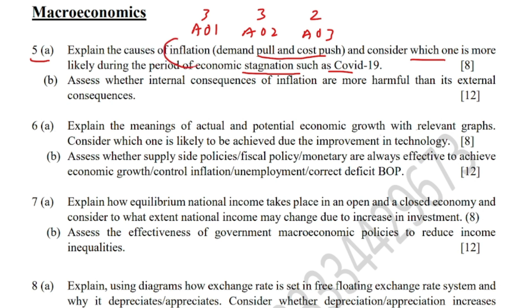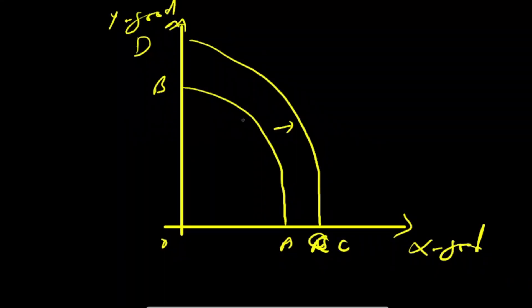For Assessment Objective 1, you first define what inflation is, what demand-pull inflation is, and what cost-push inflation is. Inflation is the persistent rise in general price level over time. Demand-pull inflation is caused by an increase in aggregate demand in the country. Cost-push inflation is caused by an increase in cost of production. Then you have to analyze them with graphs as well.